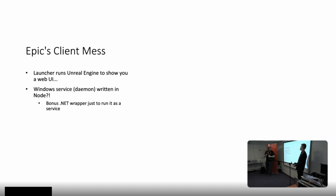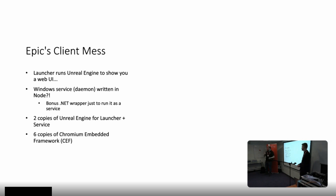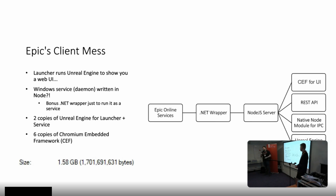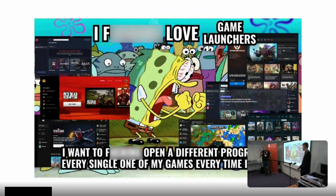Let's talk a bit about the mess. The launcher runs Unreal Engine to show you a web UI using Chromium Embedded Framework. The Windows daemon is written in Node, but it is run by a .NET app for some reason. If you install everything, you get two copies of Unreal Engine, six copies of Chromium, and it takes up 1.6 gigabytes. It's a mess. The daemon has Chromium for UI, a native Node module for IPC, and Unreal Engine for downloading stuff. And one of the great things with Heroic is we want to unify things a little bit, because there are just too many of these launchers.